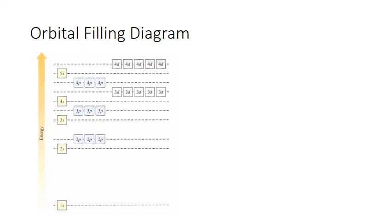Here's another example of an orbital filling diagram. This one's a little more compact than the one on the last screen, but it contains the same basic features. The boxes represent the individual orbitals, and each box holds two electrons. The number and letter inside the box indicate the principal energy level and the sublevel or shape of that orbital.